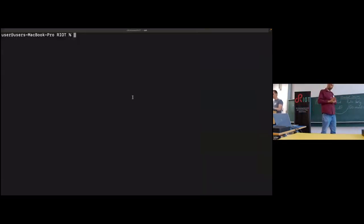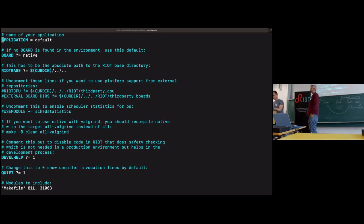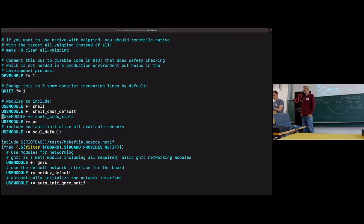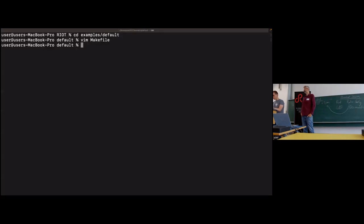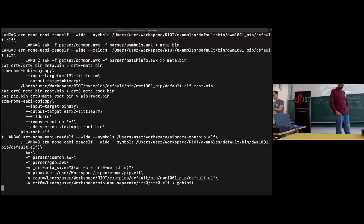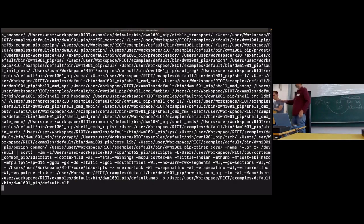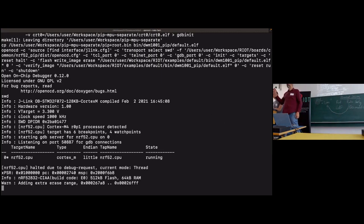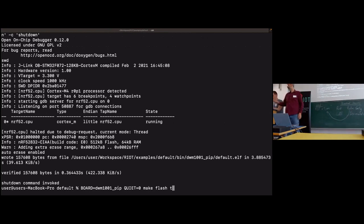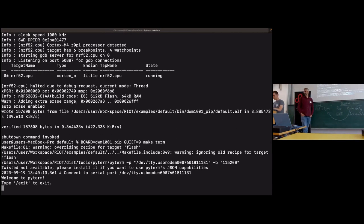So, to enable our execute-in-place file system, we first move on the default example of Riot. We edit the make file, then we uncomment the line of arm loader, and then we build Riot. So this is done offline. So now that we have built Riot, we flash it on the board, and then we connect to the Riot shell using pyterm.